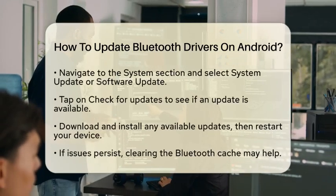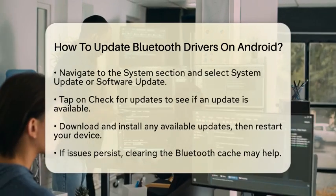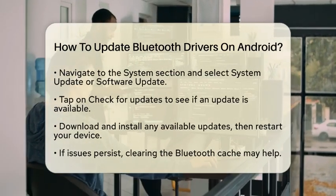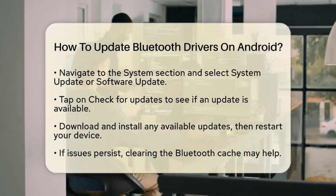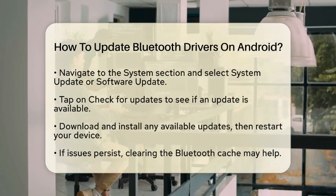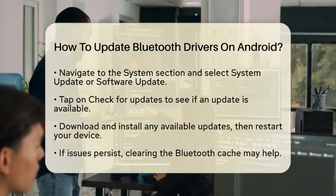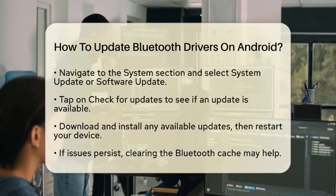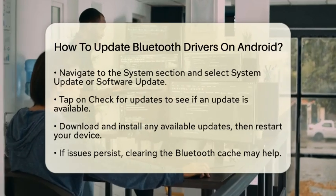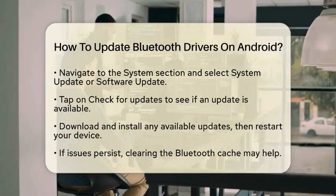To start, you should check for system updates. Open your device's Settings app. Scroll down until you find the System section. Tap on System Update or Software Update, then select Check for Updates. If an update is available, download and install it. After the installation, restart your device to apply the changes.